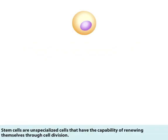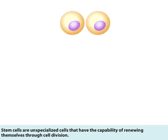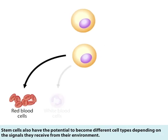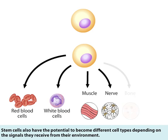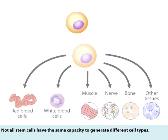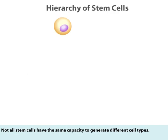Stem cells are unspecialized cells that have the capability of renewing themselves through cell division. Stem cells also have the potential to become different cell types depending on the signals they receive from their environment. Not all stem cells have the same capacity to generate different cell types.